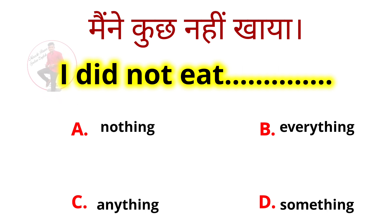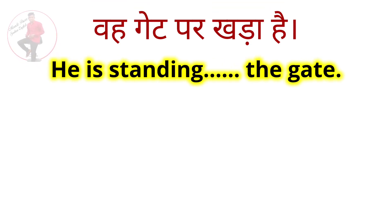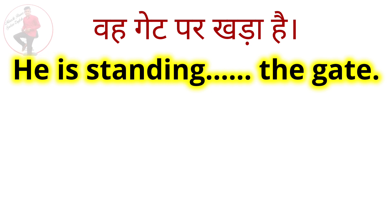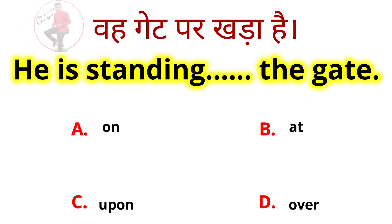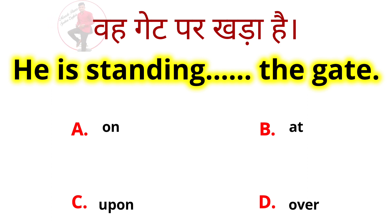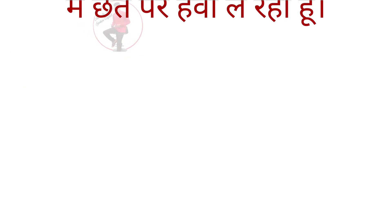The correct answer is 'anything' — I did not eat anything. 'Nothing' is not used here. Next: He is standing blank the gate. Options: on, at, over, upon. The correct answer is 'at' — He is standing at the gate — woh gate par khada hai.